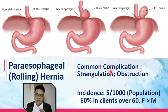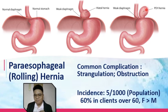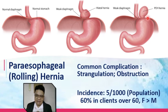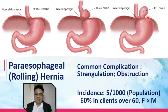The common complication for rolling hernia is strangulation and obstruction. There is a high tendency that blood flow going towards the protruded portion above the diaphragm would be decreased, and if not addressed accordingly, that area will turn purplish. The incidence is around 5 in every 1,000 population; however, it increases to 60% in clients over 60 years old.